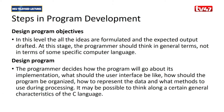The steps in program development are: first, design the program objectives — formulate all ideas and draft the expected output, thinking in general terms about what the program should achieve. Second, design the program — decide how it will work, what the user interface should look like, how the program should be organized, how to represent data, and what methods to use during processing.